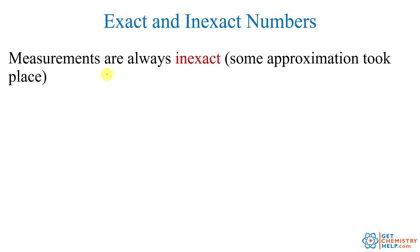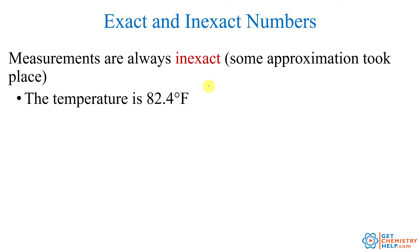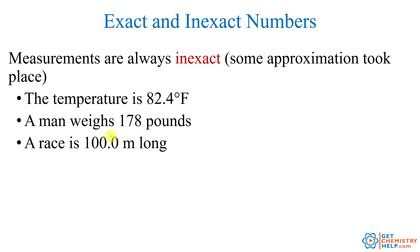By contrast, measurements are always inexact. When you're measuring something, it's not been defined — you're trying to determine what the value is. The reason it's inexact is there's some kind of approximating, some kind of estimating. For example, maybe you measure the temperature of something and it's 82.4 degrees Fahrenheit, or you measure your weight on the bathroom scale and it comes up 178 pounds, or you measure the length of a race and it's 100.0 meters. These have all been measured, so these are called inexact numbers. We're not saying that person is exactly 178 pounds, but they're approximately 178 pounds.